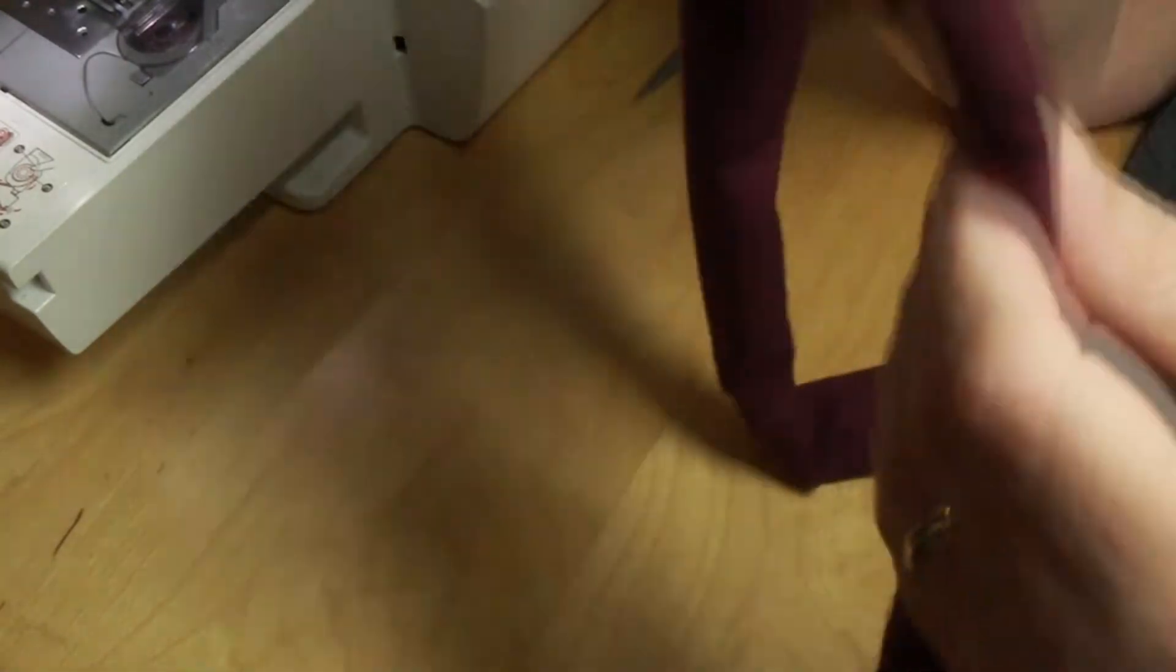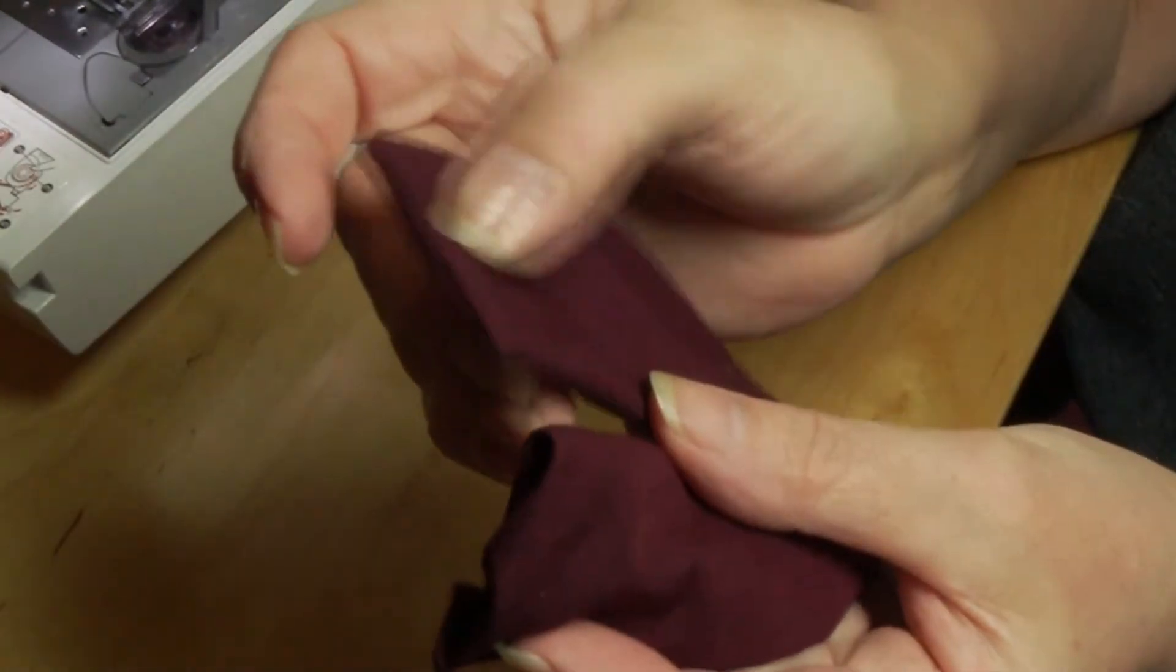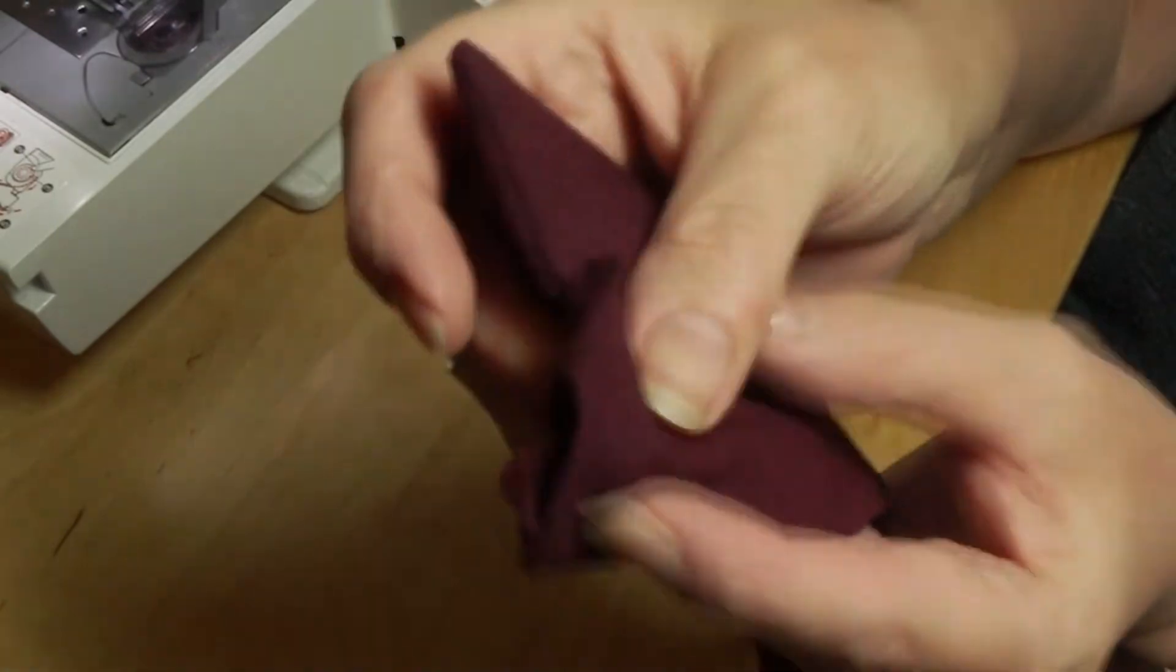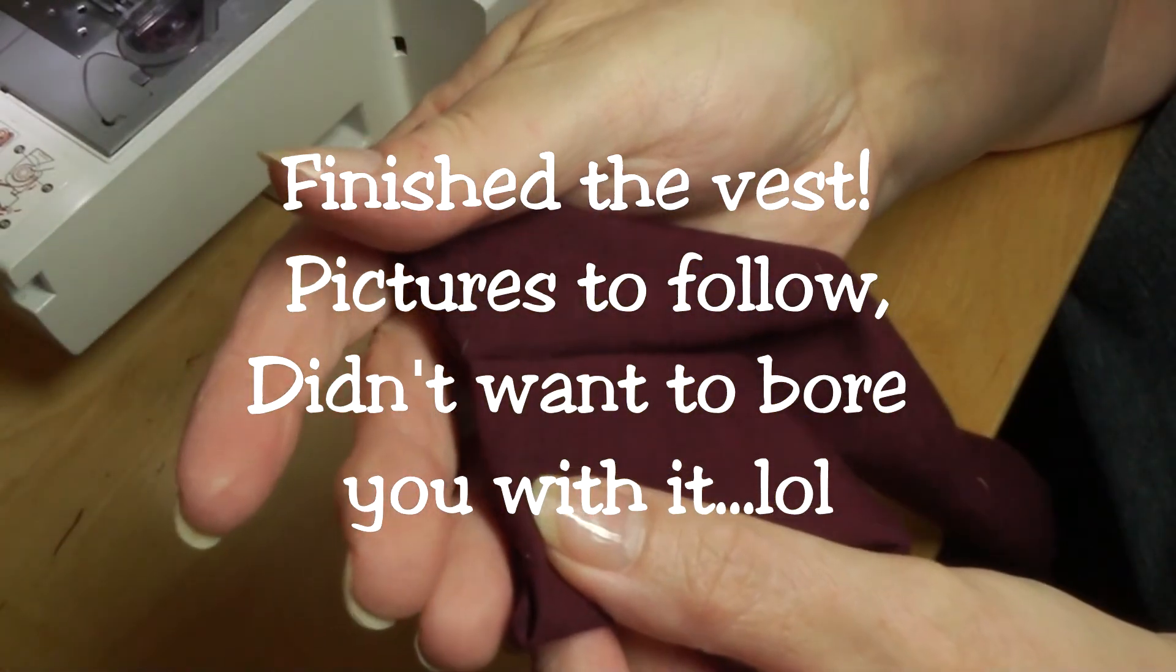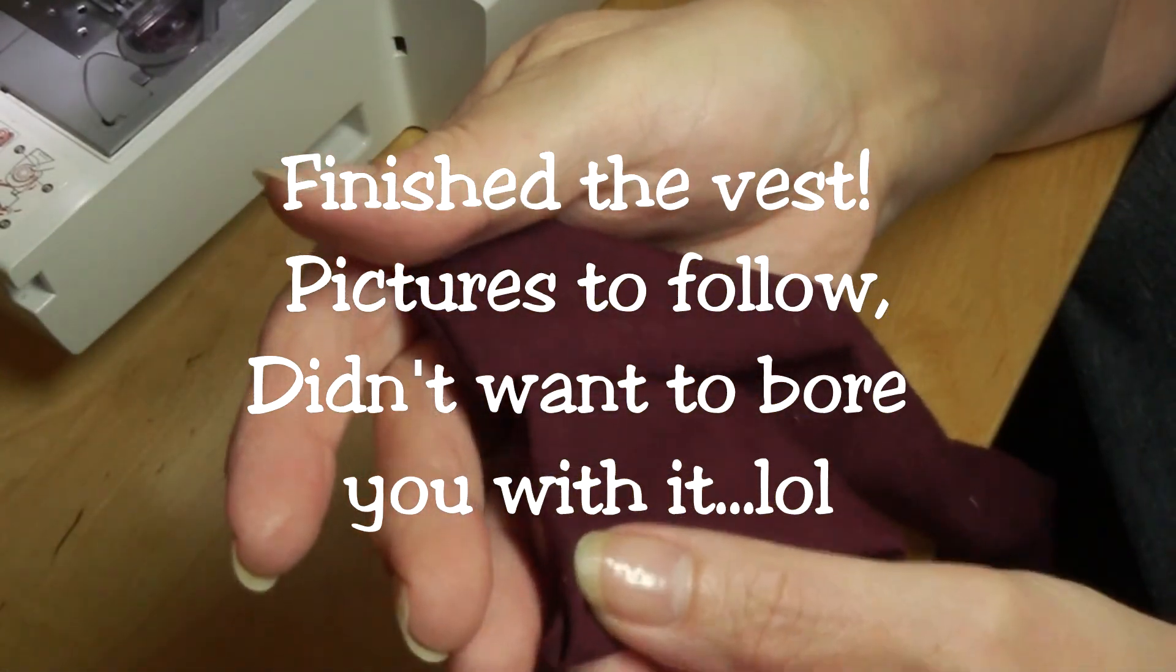And then at the open edge you are going to press it under and slip stitch it closed. But I am actually going to be doing a little decorative stitch here and on this end. So I am actually going to press mine under and I am going to do my decorative stitch over the top so I don't have to slip stitch.